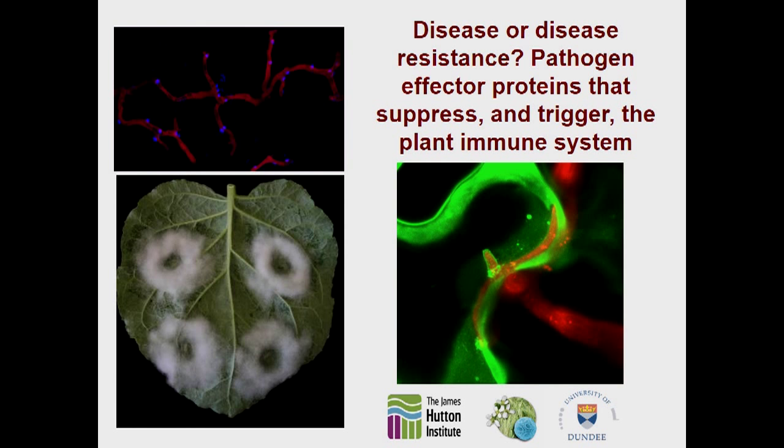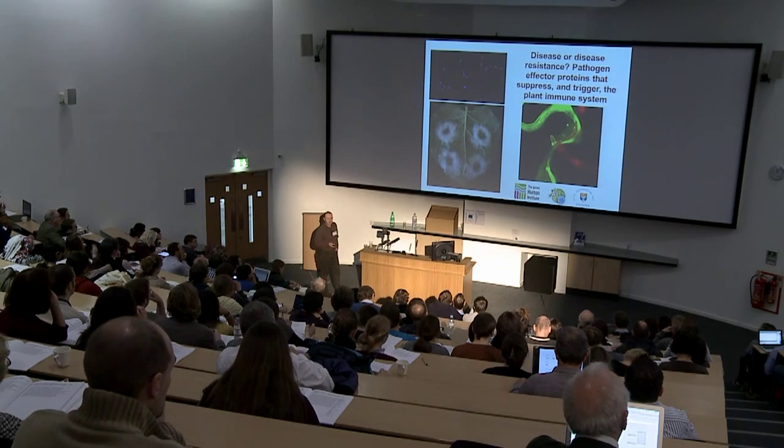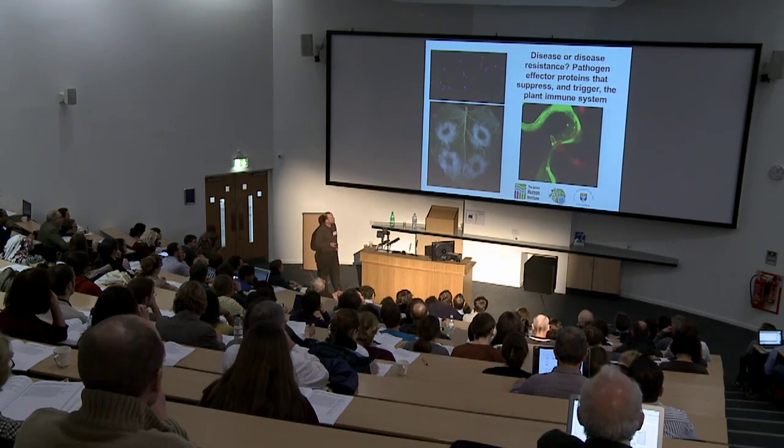As Jim says, I'm going to be talking about proteins secreted from pathogens called effectors. You've already heard something about them in the talks this morning. I'm going to be looking at how they're acting to suppress and manipulate host defenses, the immune system in the plant, but also conversely how they can actually be recognized by that system.